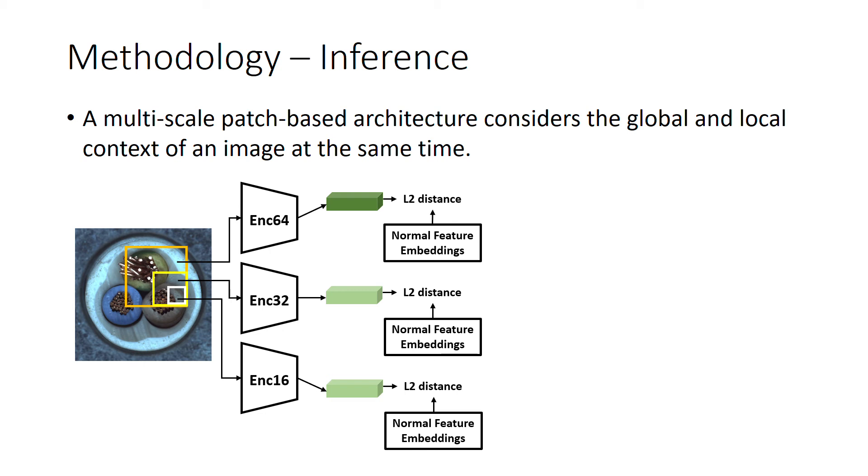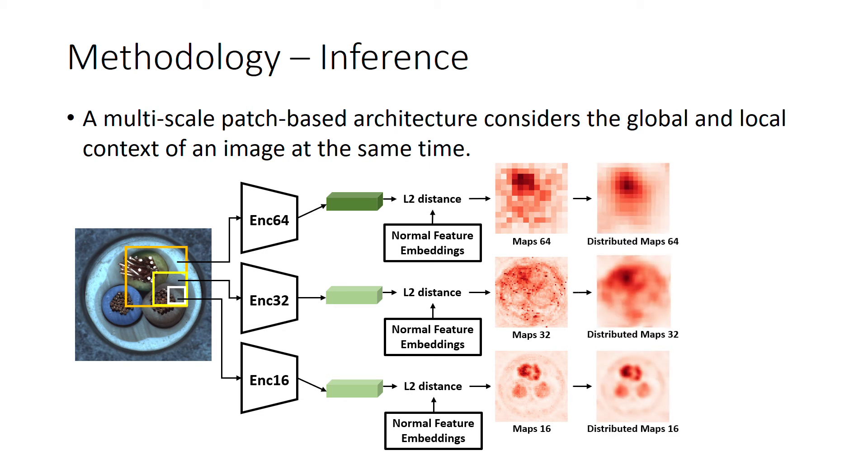Next, we picture the anomaly map by making the patchwise calculated anomaly scores distributed to the pixels by averaging the scores overlapped on the same pixels. After that, we aggregate the maps corresponding to different patch sizes by using elementwise addition to obtain the final anomaly map.